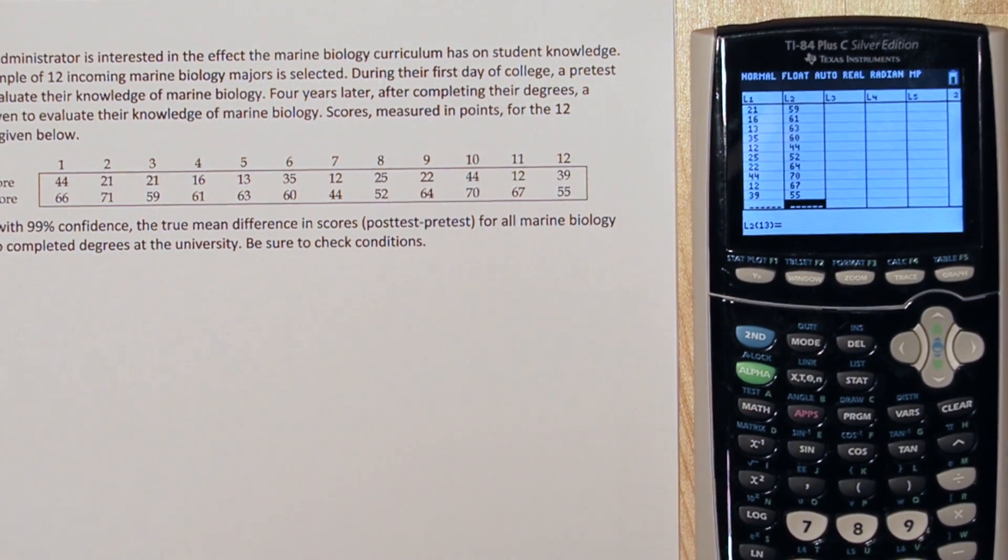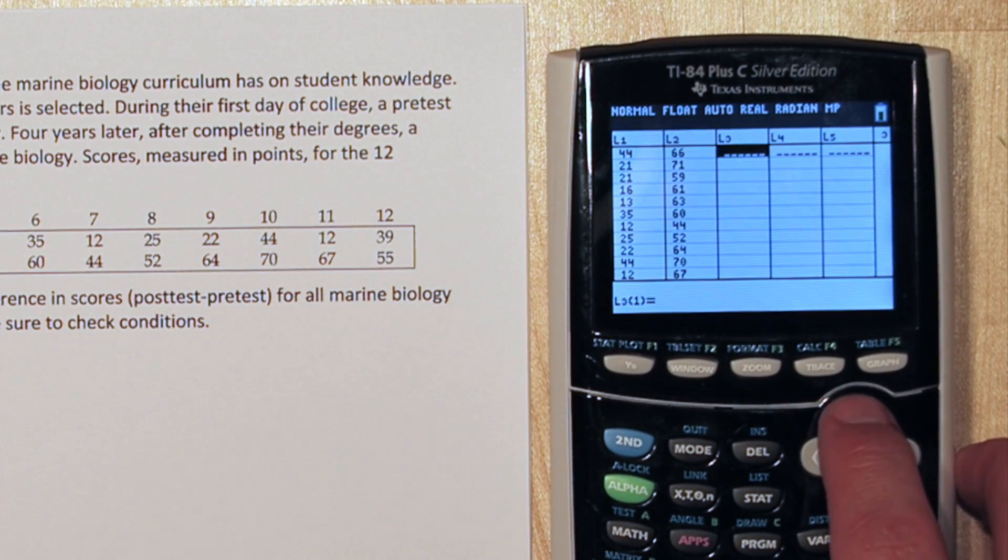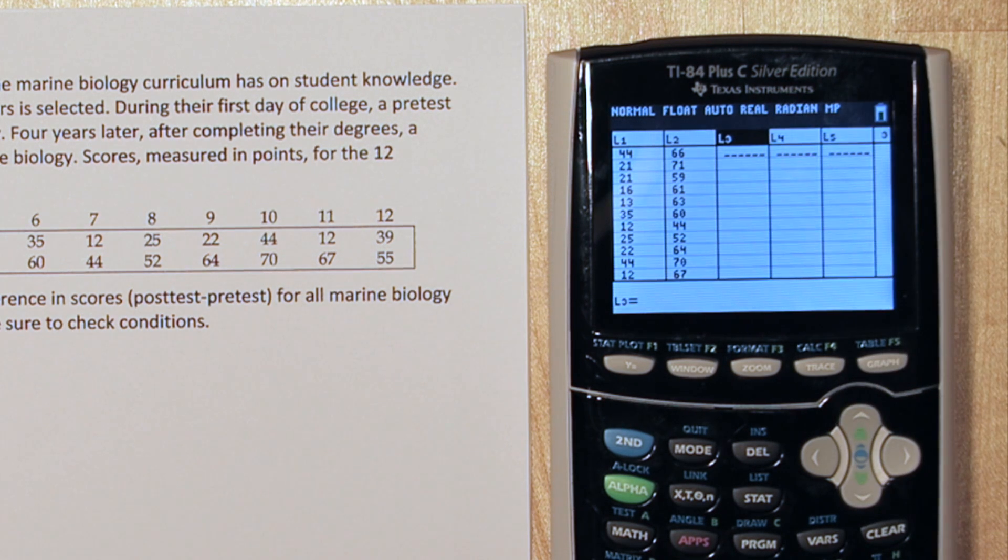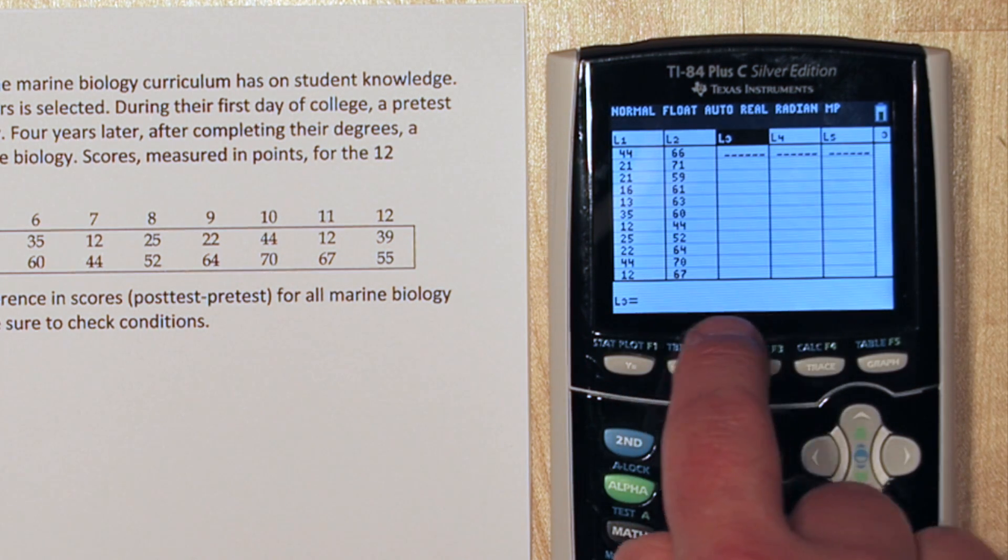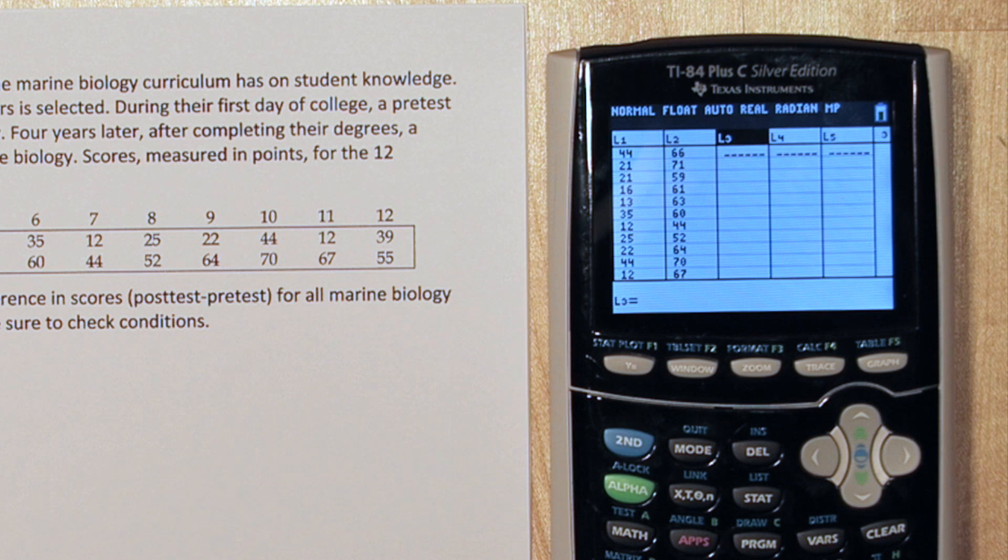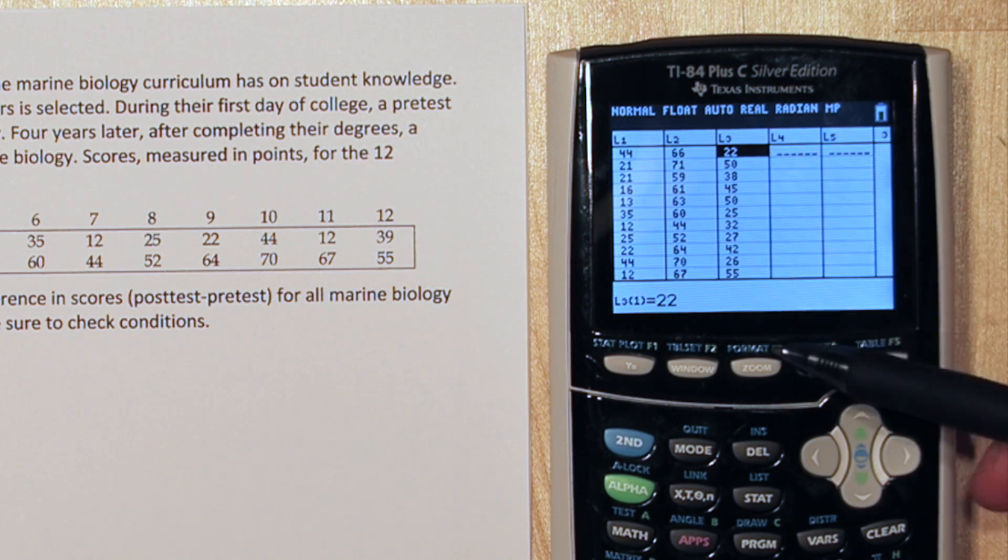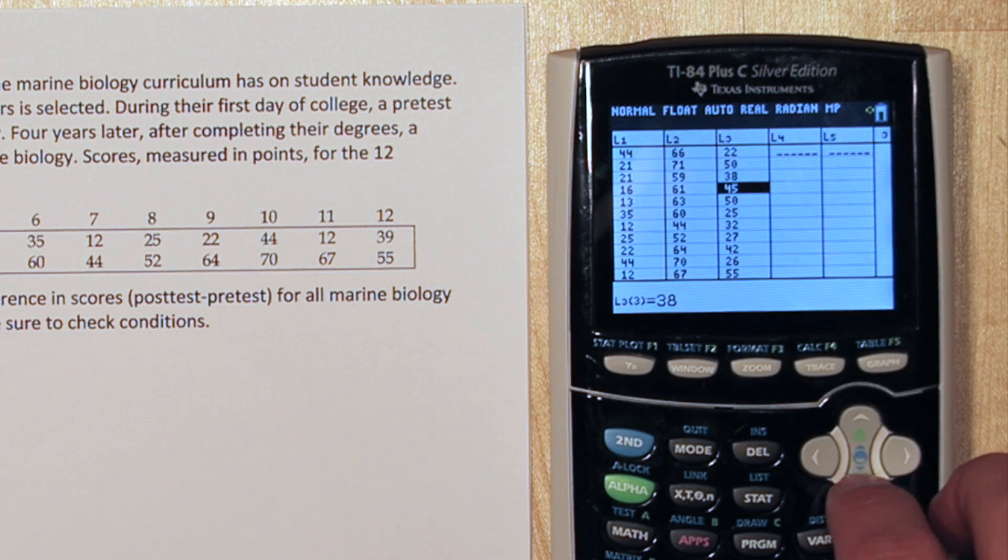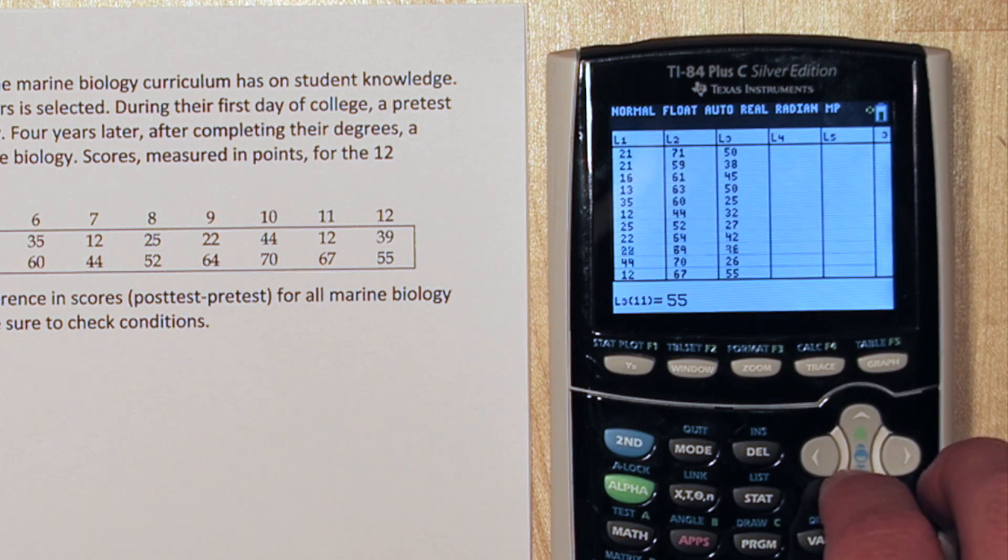Since we're interested in the difference, press over and then press up so list three is highlighted. Down here is the function bar. It's where we can type in a function for list three. So since we want the pretest scores subtracted from the posttest scores, we're going to say list two, so press second, two, minus list one, the pretest scores, second, one. When we press enter, it's going to automatically subtract all the scores. So these are the differences, and this is what we're going to actually construct our confidence interval with.